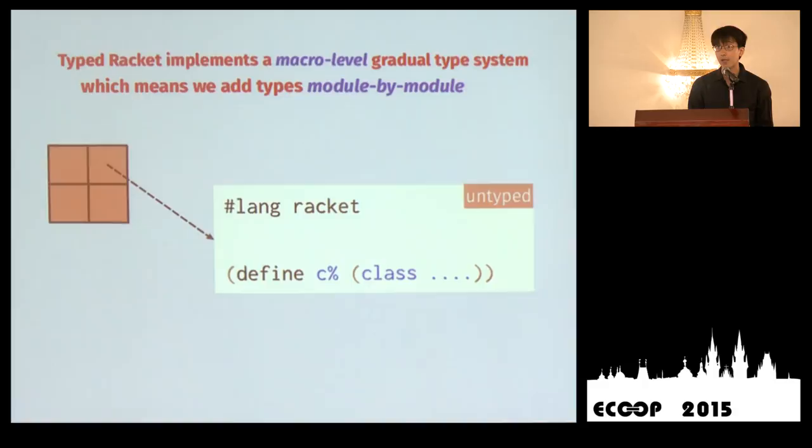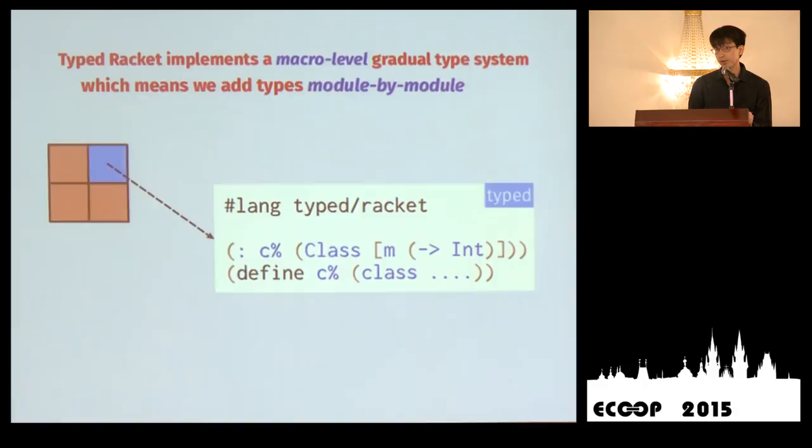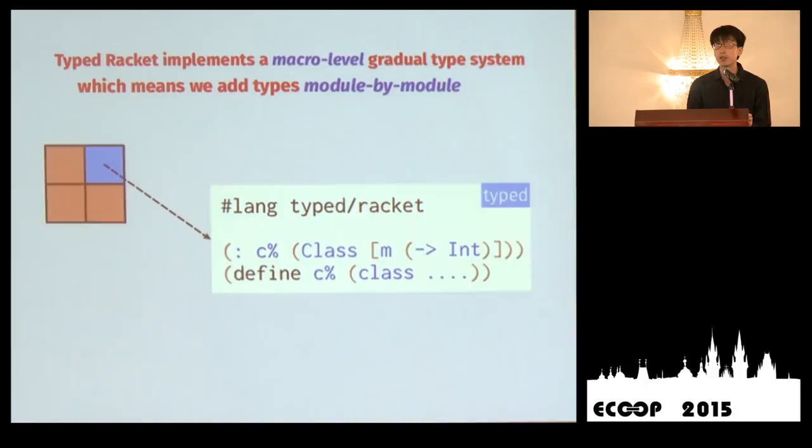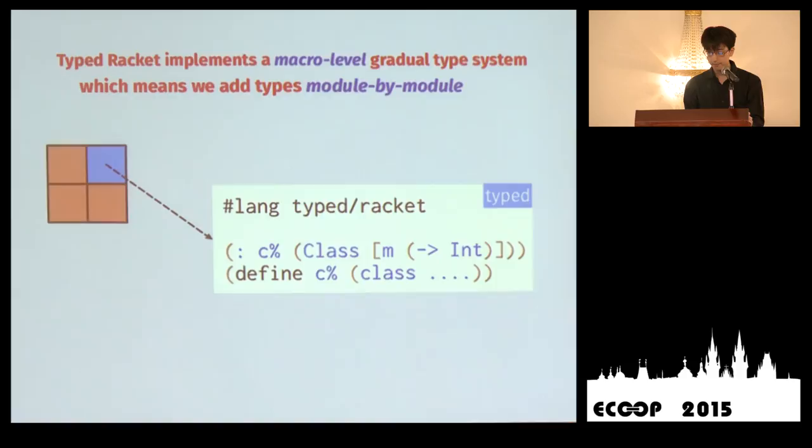We can use Typed Racket to gradually type this program. To do that, we change the language to the Typed Racket language and add type annotations. We have to add type annotations to all of the exports — for example, classes that we might export from this module. Then the program is gradually typed. I'll show typed modules as blue boxes.